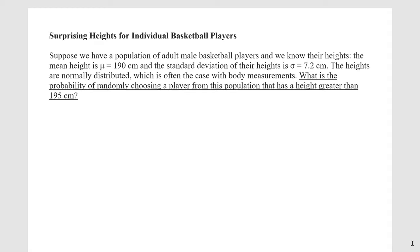Suppose we have a population of adult male basketball players — let's pretend it's the NBA — and we know the height of every player in the NBA. So we know the data for the entire population. The mean height is 190 centimeters, and the standard deviation of their heights is 7.2 centimeters. The heights are normally distributed, which is often the case with body measurements.